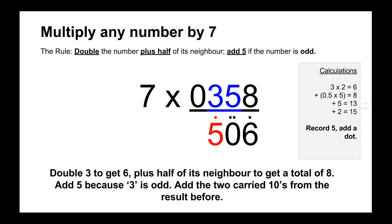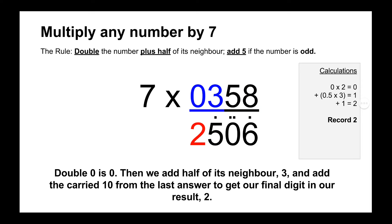And then we move on to our next number, which is 3. And again, 3 is odd, so we have another rule to add to it. So we double the number first to get 6, and then we add half of its neighbor. Its neighbor is 5, so half of 5 is 2, so 6 plus 2 is 8. And then because 3 is odd, we have to add 5, so 5 plus 8 equals 13. And then we add the 2 carry dots from our previous answer to get our answer 15. So we record the 5 and then add a dot above it to represent the carry 10.